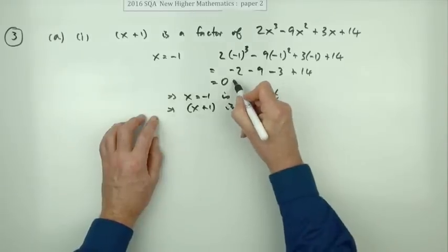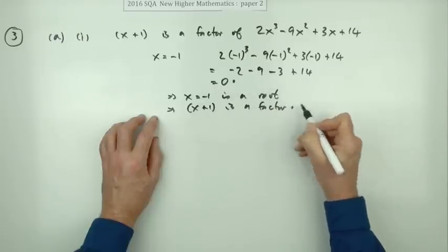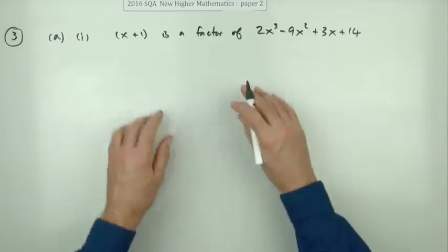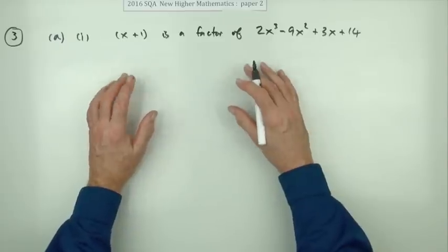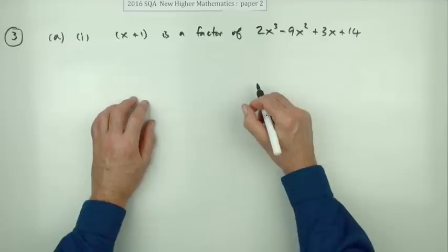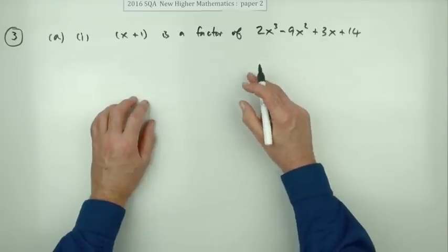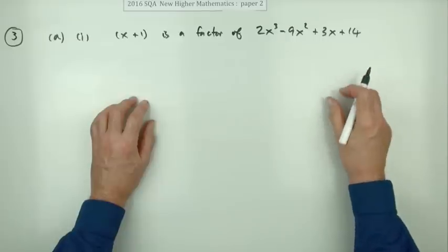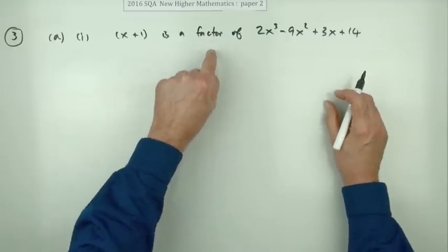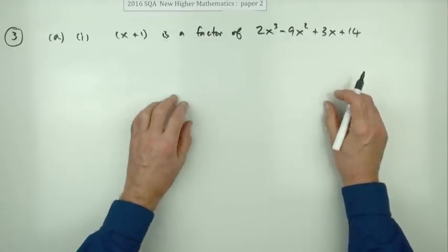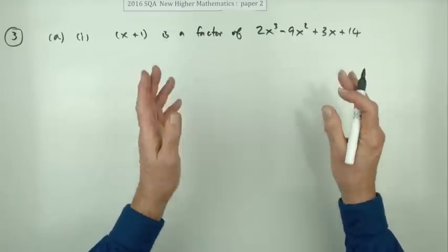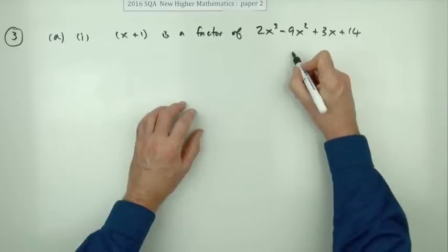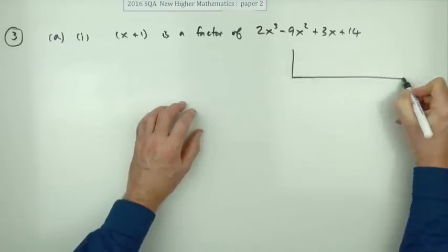One mark is for getting the answer of zero and the other mark is for the conclusion. However, that approach is only appropriate if all you want to do is show that it's a factor. If you want to then use the result to factorize or solve an equation, it's better to use the division method — show it divides in exactly, then do the division.